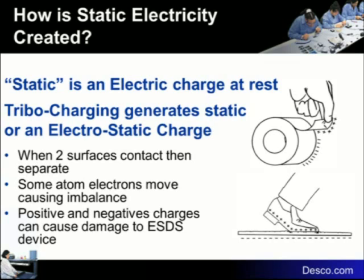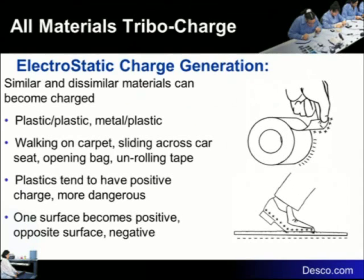Both positive and negative charges can cause a problem in your electronic devices. It doesn't really matter whether the charge is positive or negative — it has to do with the differential. If I'm charged 1,000 volts positive and he's charged 1,000 volts negative, the difference between us is 2,000 volts, which is the same as one of us being charged 2,000 and the other being zero. Whenever you have dissimilar materials — plastic on plastic, plastic on metal — you're going to get a charge.